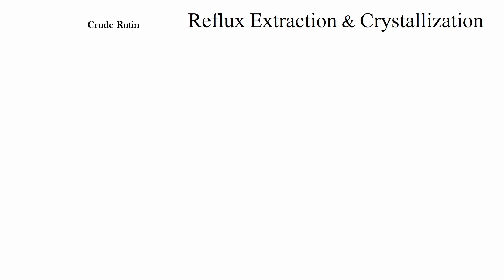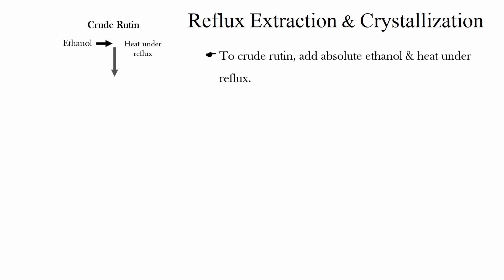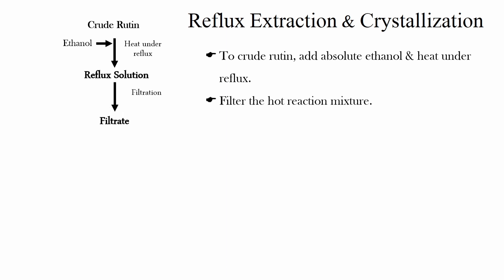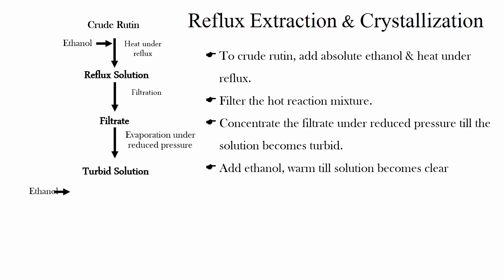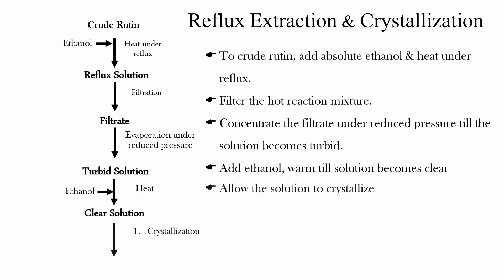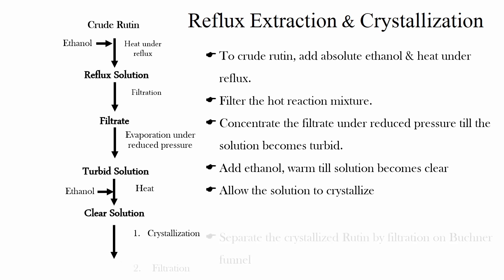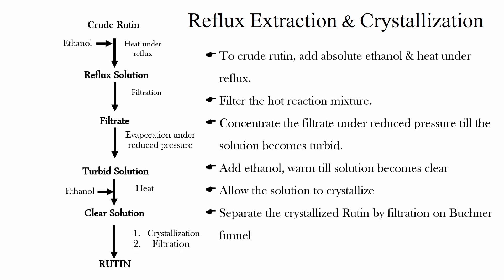Reflux extraction and crystallization: To the crude Rutin, add absolute ethanol and heat under reflux. Filter the hot reaction mixture. Concentrate the filtrate under reduced pressure till the solution becomes turbid. Add ethanol and water till the solution becomes clear. Allow the solution to crystallize, and separate the crystallized Rutin by filtration on a Buchner funnel.